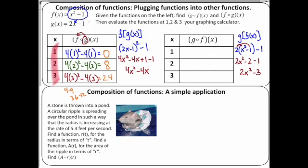Evaluating g of f of x: plugging in 1 gives 2 minus 3, which is negative 1. Plugging in 2: 4 times 2 is 8, minus 3 is 5. And plugging in 3: 9 times 2 is 18, minus 3 is 15. You can see that order does matter — the results are completely different depending on which way you plug them in.